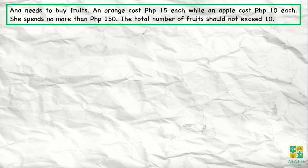Anna needs to buy fruits. An orange costs 15 pesos each while an apple costs 10 pesos each. She spends no more than 150 pesos. The total number of fruits should not exceed 10.